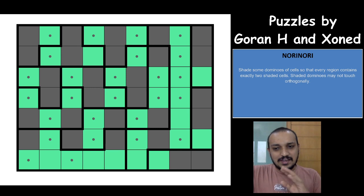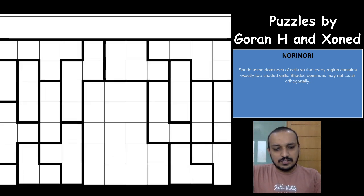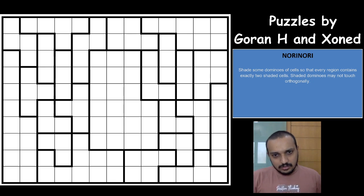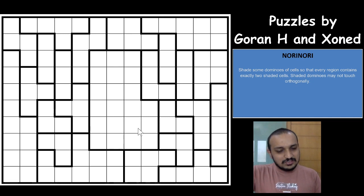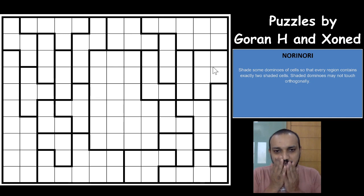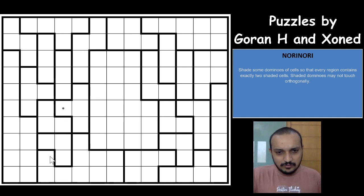Now coming on to the second puzzle by Zoned. This is a really bigger puzzle — I can see there is a really large region, and shading only two cells in that region seems really difficult. I think the smaller regions need to help us out. Let's start again with the terminal technique: both of these cells will have to be unshaded, and both of these cells will have to be unshaded.